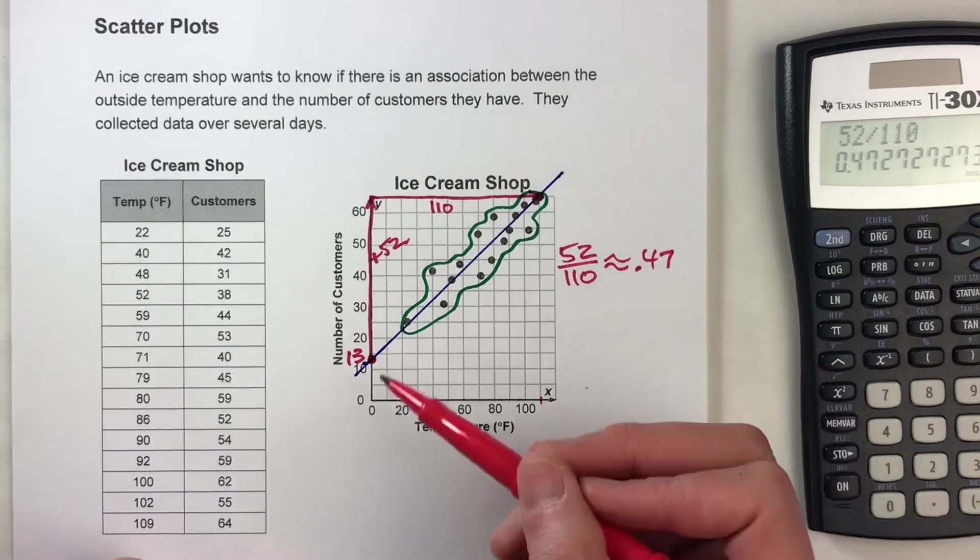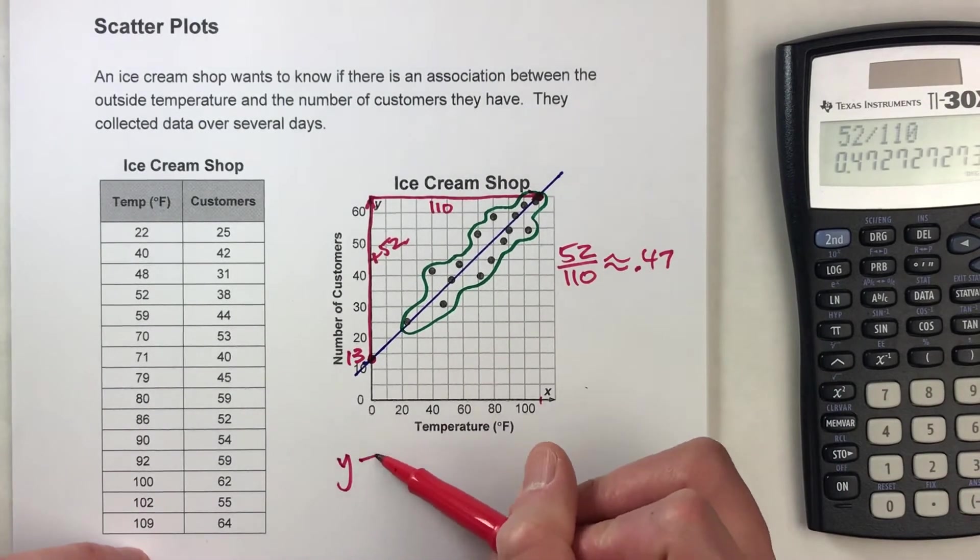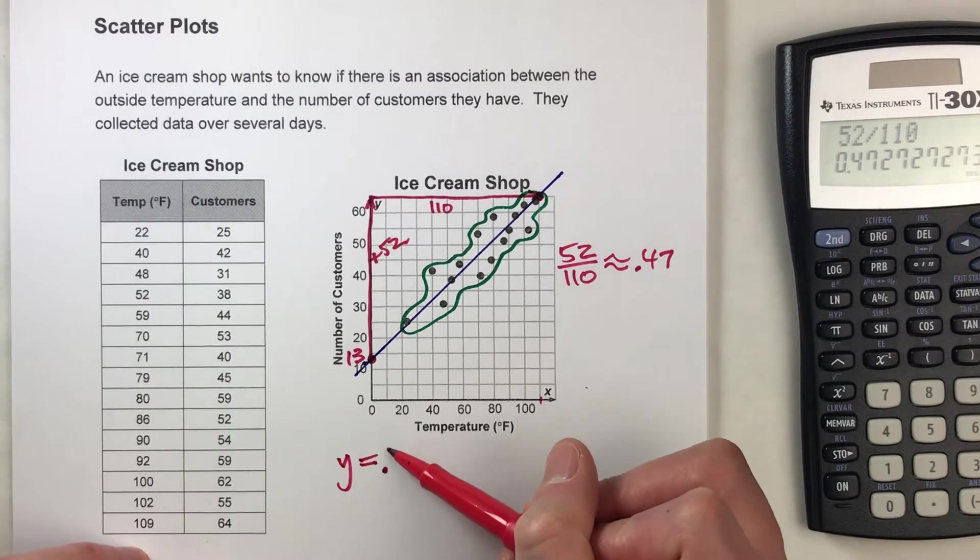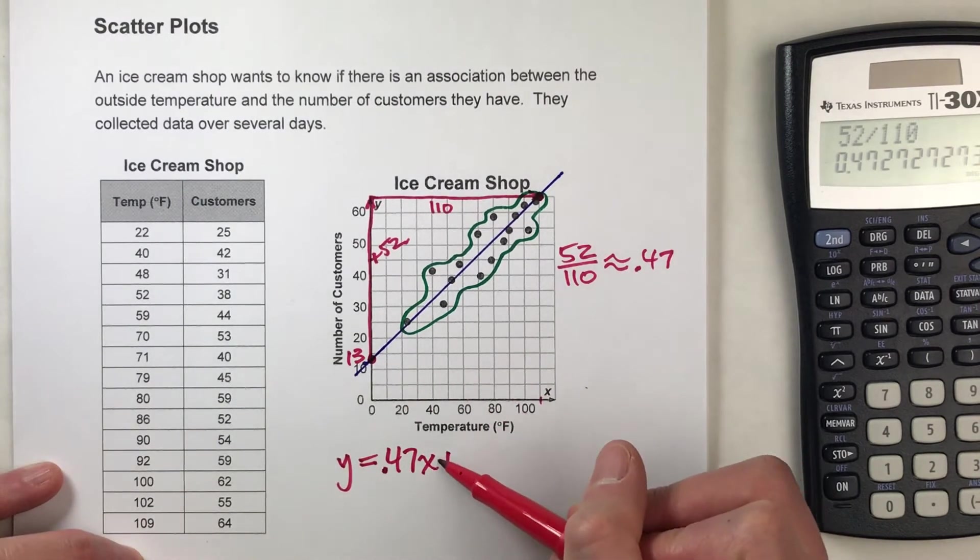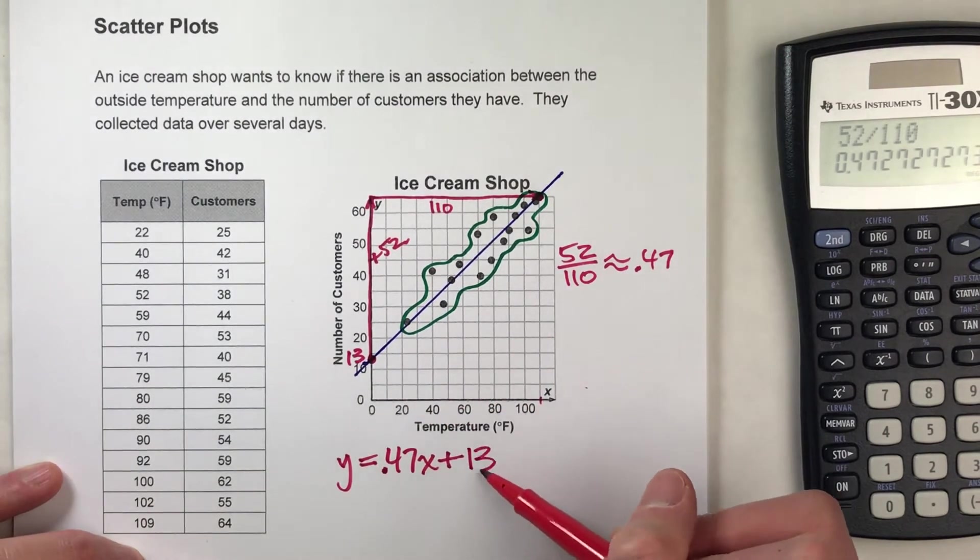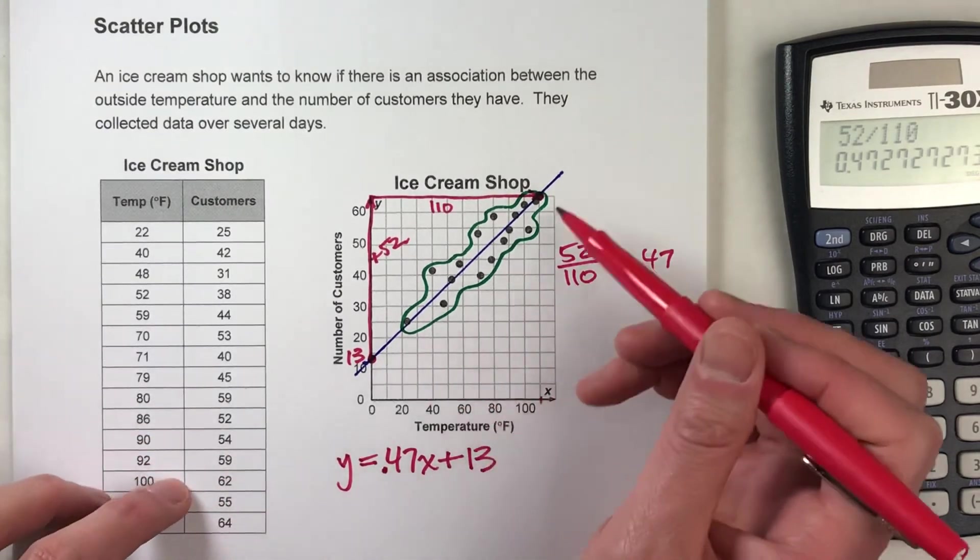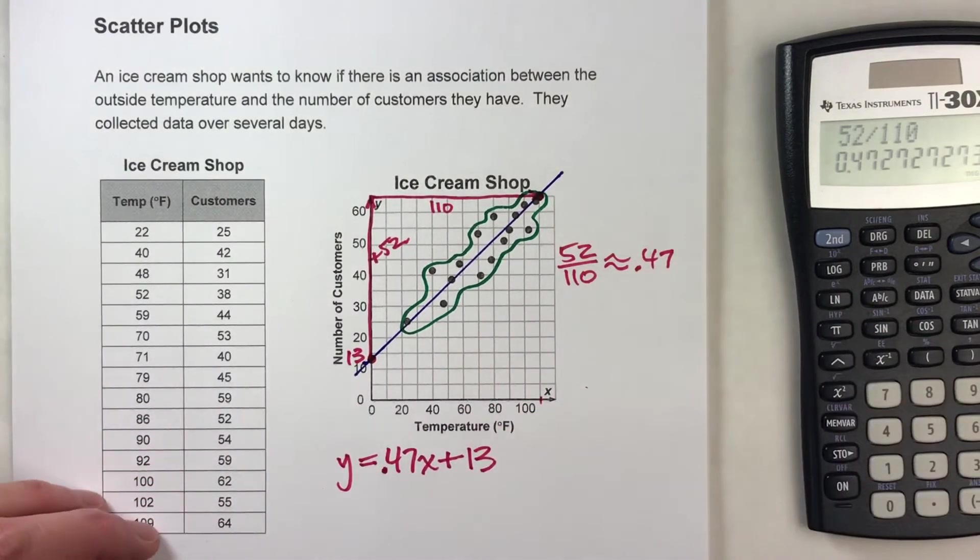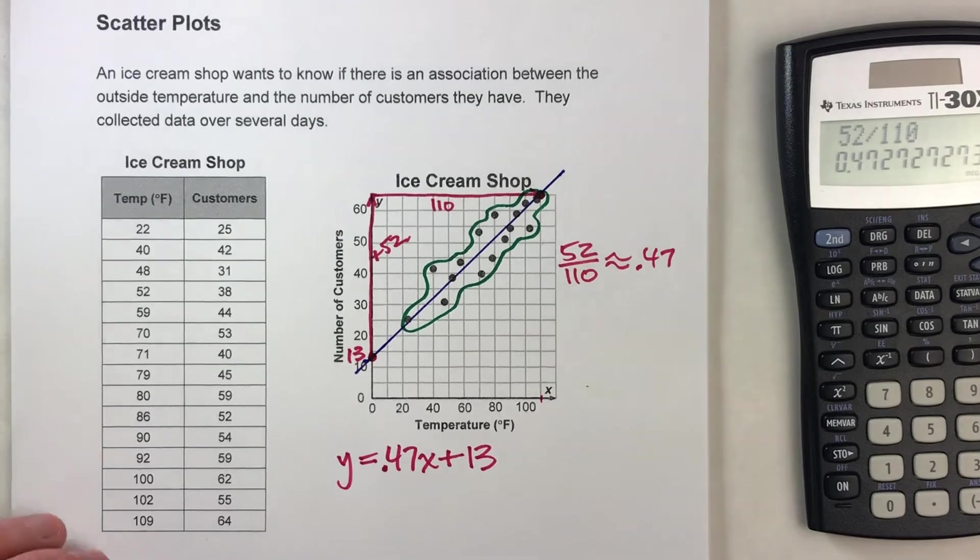So now that I know my slope, my equation is going to be y equals 0.47x, because that's my slope, plus my y-intercept, which is 13. And that is the equation for this trend line. All right. Why don't we do a second example?